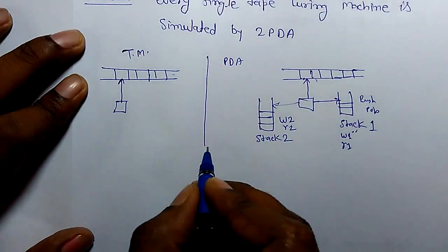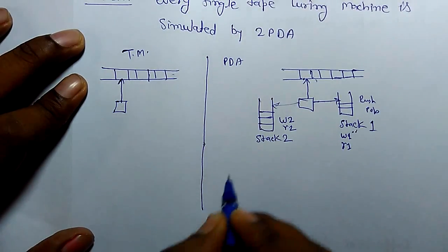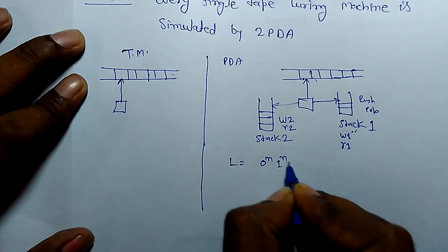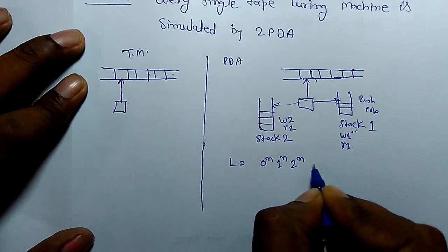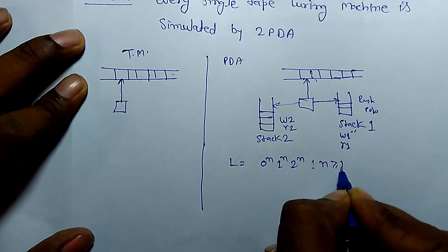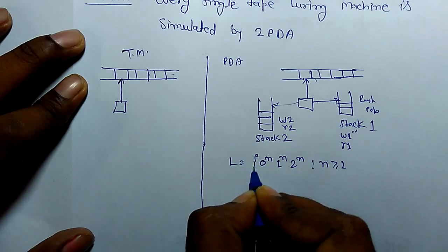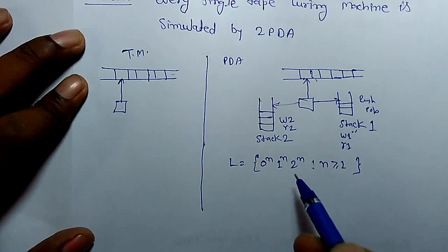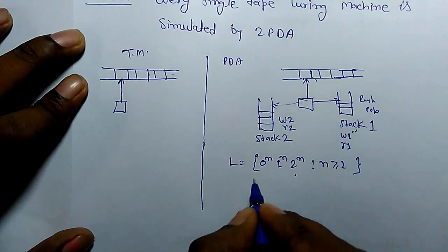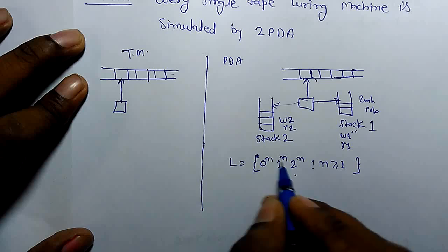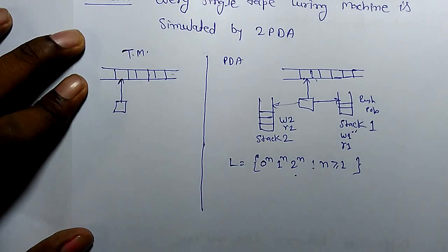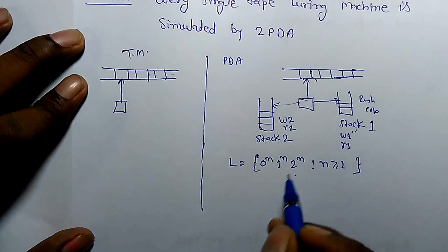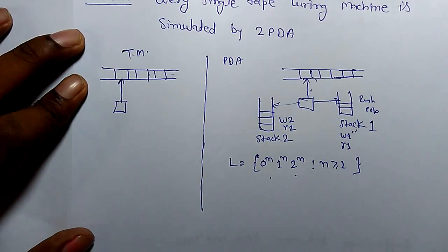Let's take an example of how this is equivalent to a Turing machine. Consider the language 0^n 1^n 2^n where n ≥ 1. Is this language accepted by a single pushdown automaton? No, because this is not a context-free language — it is context-sensitive, requiring a Turing machine. However, we can see that this language can be implemented using a 2-PDA.